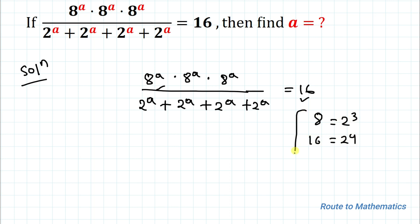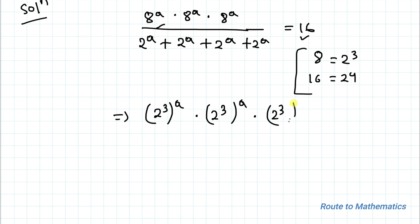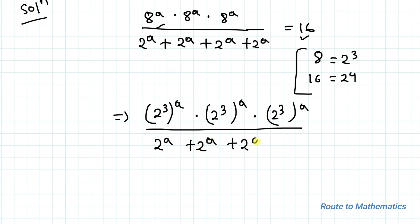So let's convert each base to a power of 2. This gives us: 2 to the power 3, whole to the power a, multiplied with 2 cubed whole to the power a, multiplied with 2 cubed whole to the power a, divided by 2 to the power a plus 2 to the power a plus 2 to the power a plus 2 to the power a, equals 2 to the power 4.